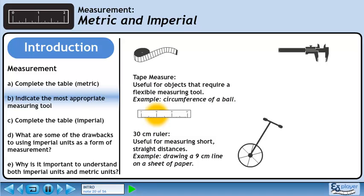A 30 centimeter ruler is useful for measuring short, straight distances. For example, we can use it to draw a 9 centimeter line on a sheet of paper.